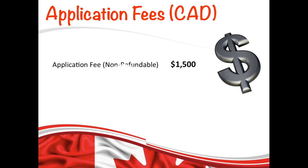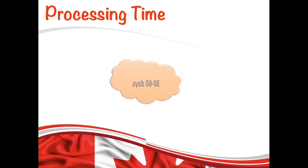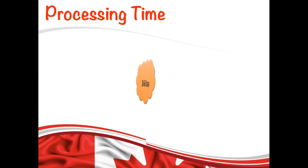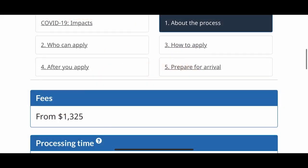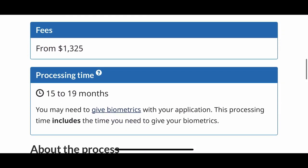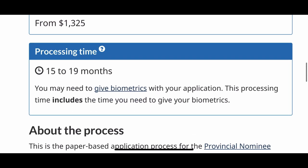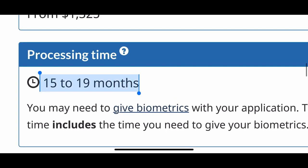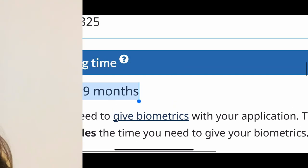The OINP application fee is $1,500, and it is non-refundable. The processing time for this stream is 30 to 60 days to process your nomination application. For PR, the processing time is different — it is 15 to 19 months.